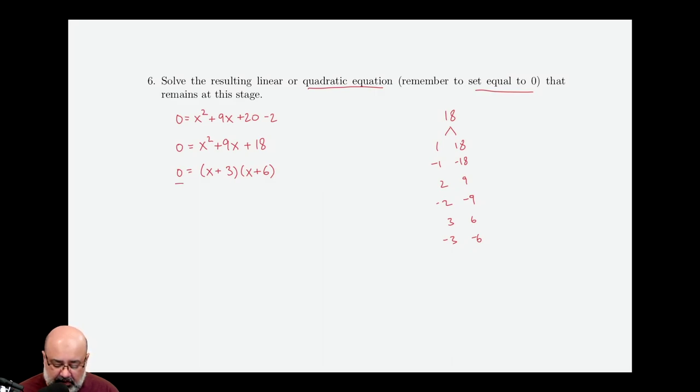So the right-hand side factors to x plus 3 times x plus 6. And because we have a 0 on one side and a product on the other side, we can invoke the zero product property, which says either x plus 3 must equal 0, or x plus 6 must equal 0. And if we solve each of these equations for x, we get x equals negative 3, or x equals negative 6. Now again, these are potential solutions.